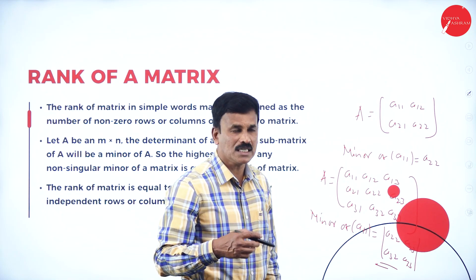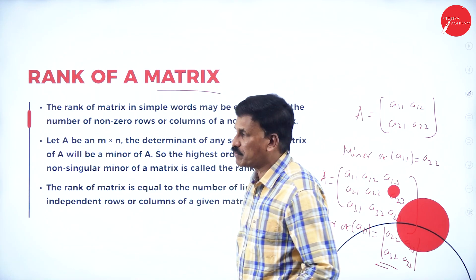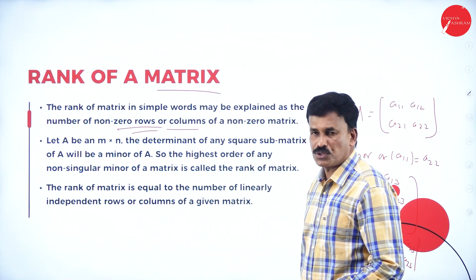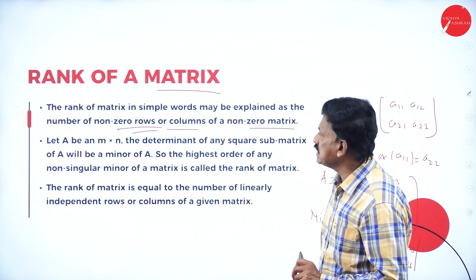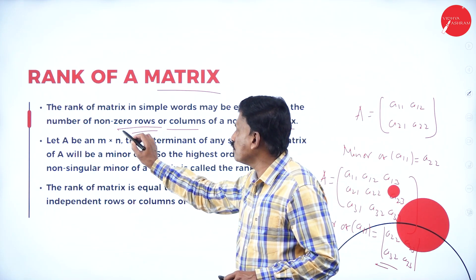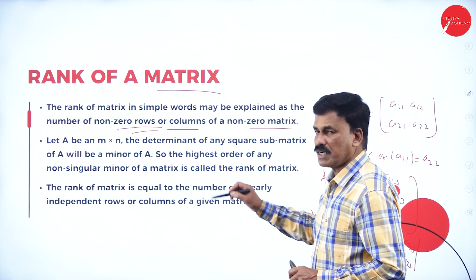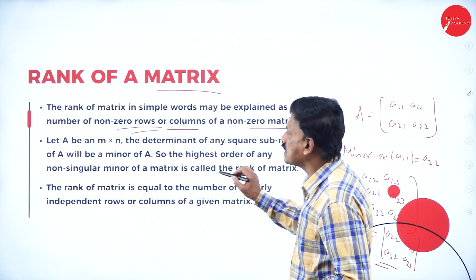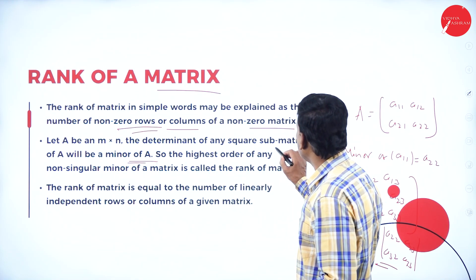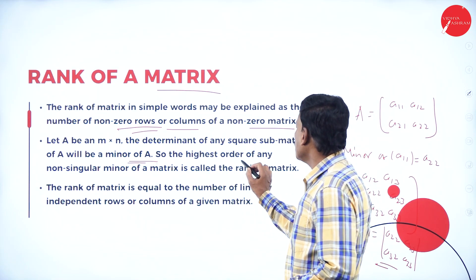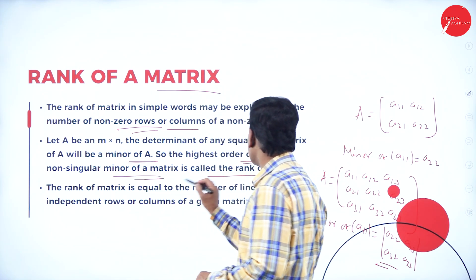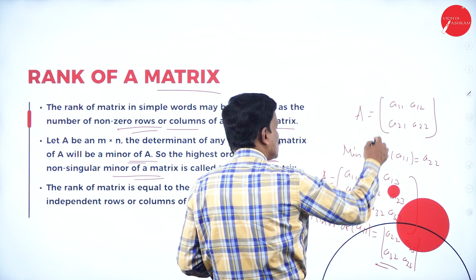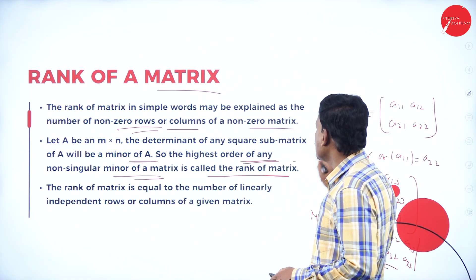Now you have an idea regarding the minor of an element. What is the definition of rank of a matrix? The rank of a matrix is the number of non-zero rows or columns of a non-zero matrix. Let A be a matrix of order M×N. The determinant of any square submatrix of A is called a minor of A. The highest order of any non-singular minor of a matrix is called the rank of the matrix.